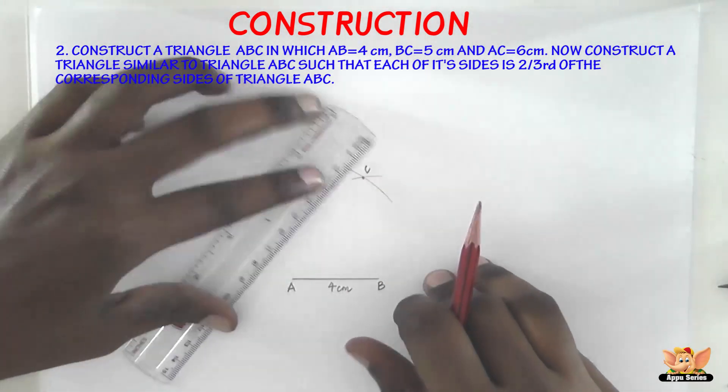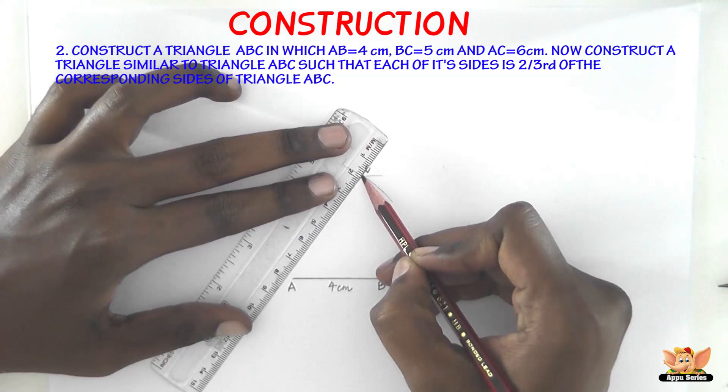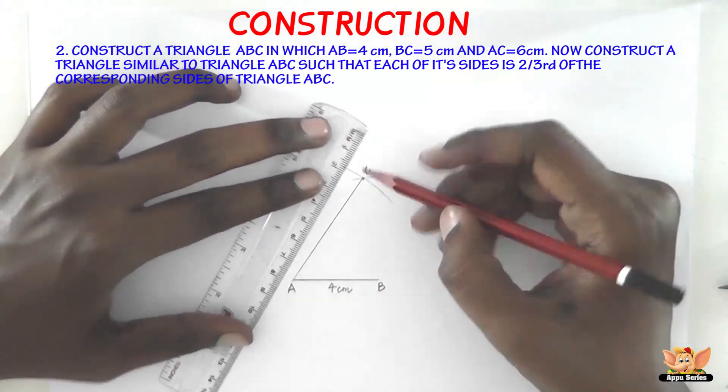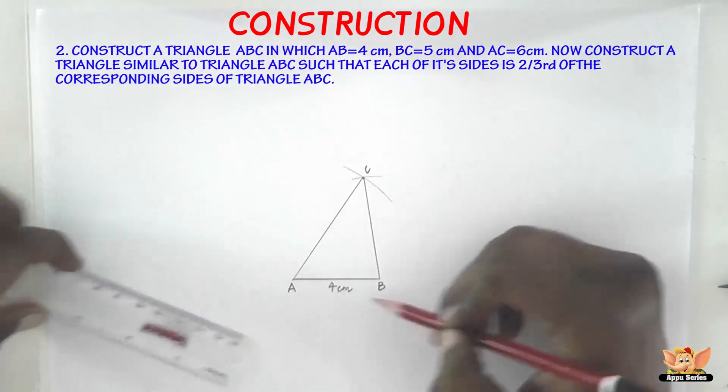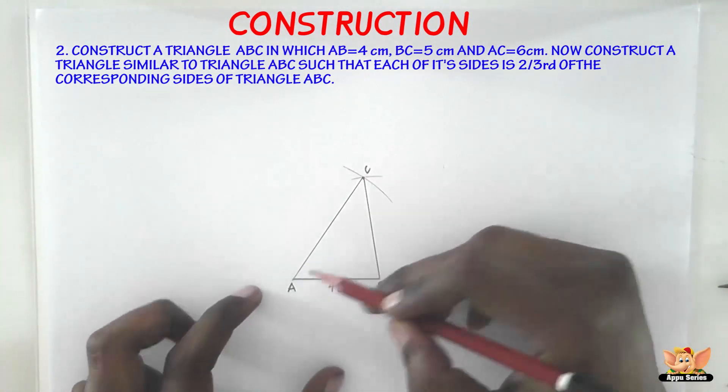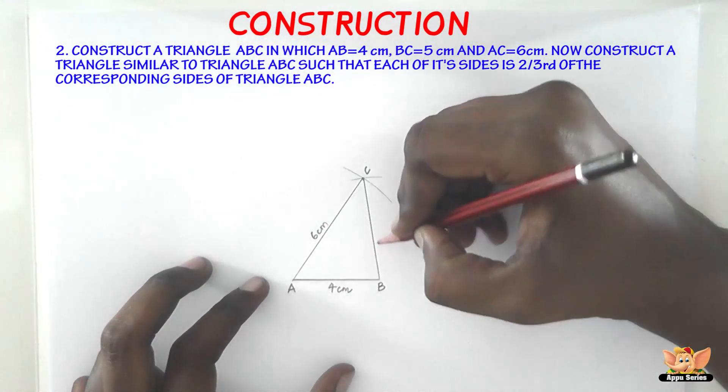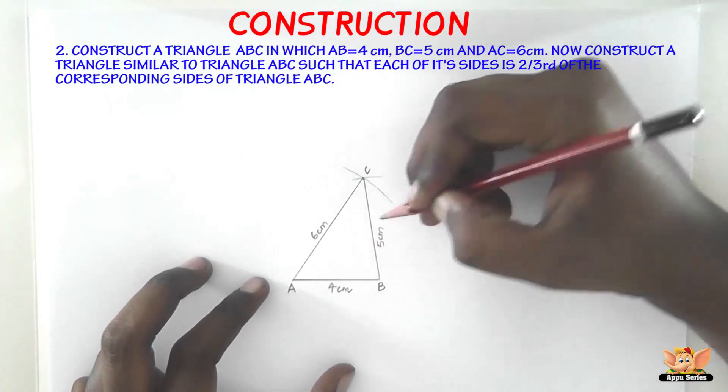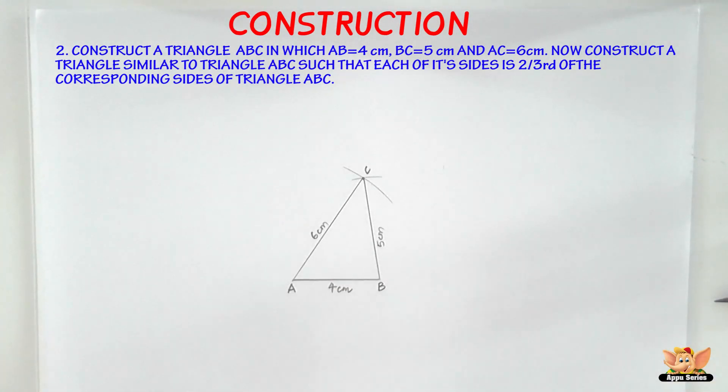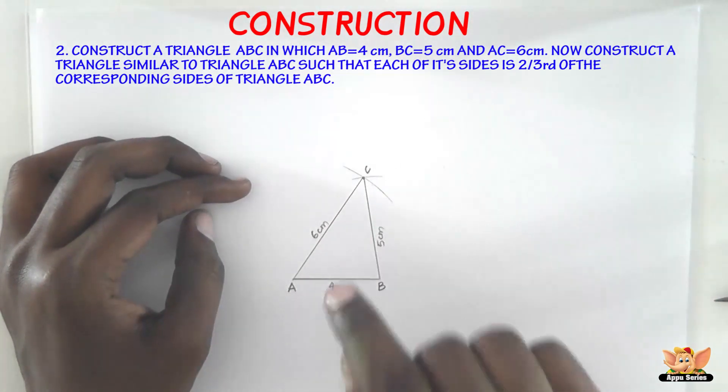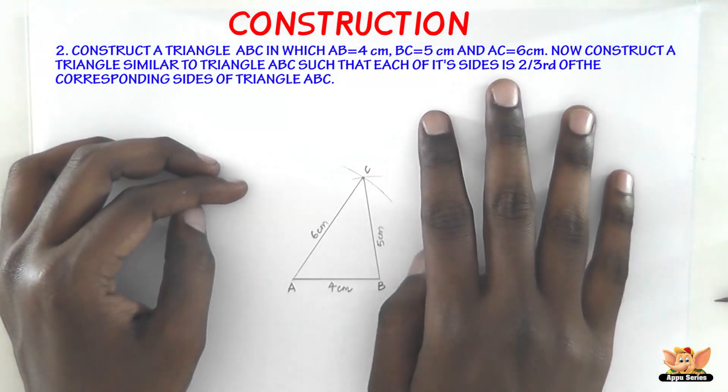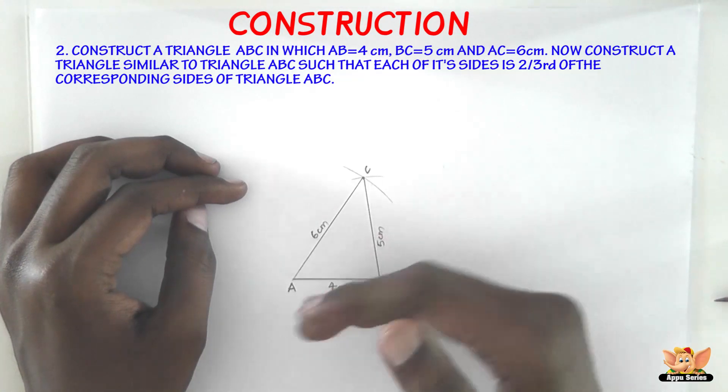So here we have 5 cm so this cuts this arc here so this point that we obtained is C and let us join this now to make it a triangle ABC in which AB measures 4 cm, AC measures 6 cm and BC measures 5 cm. So now what do we have to do? This is the most basic thing that we have done in this problem. The next step is to construct a triangle similar to this triangle and each of those sides should be 2/3 the corresponding sides of this triangle.